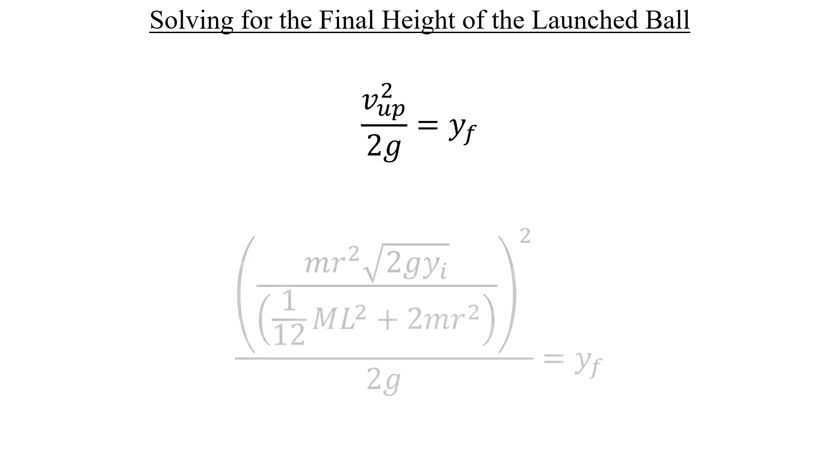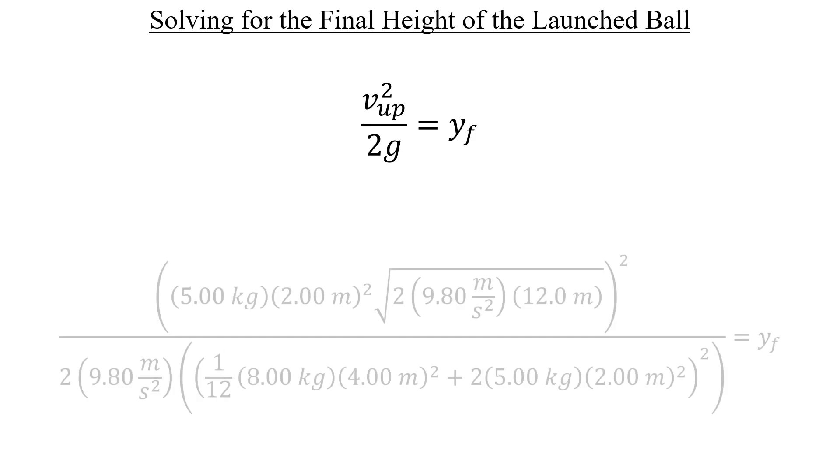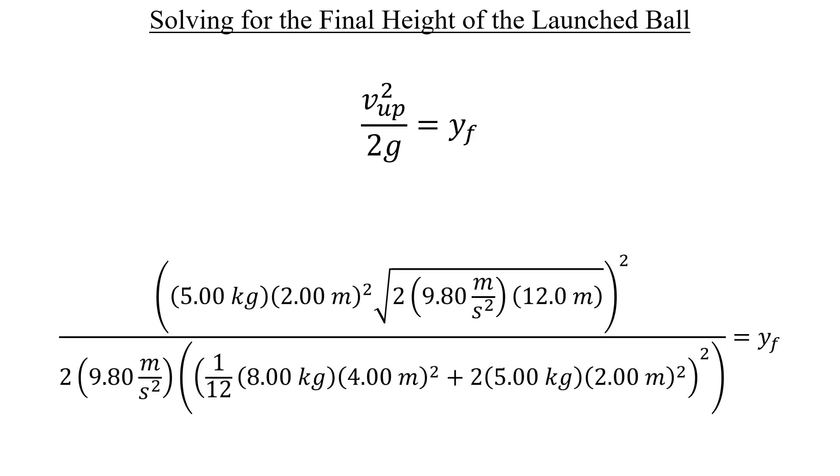We can stick in our expression for v_up into the numerator on the left and square it. Rather than having a fraction buried within another fraction, I'm going to rearrange this so that we end up with just a single ratio over on the left. Now everything is defined in terms of numbers that we know, so we can plug our values in and stick it in a calculator and see what we get. On my end, the result is a final height of approximately 1.87 meters, and now we're done.